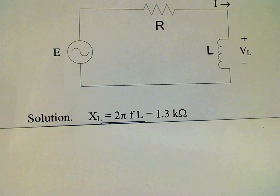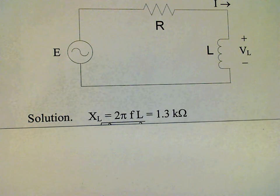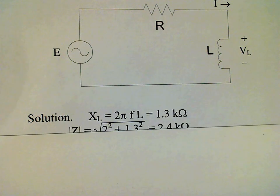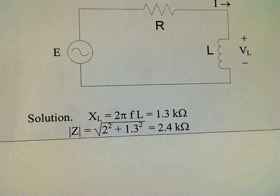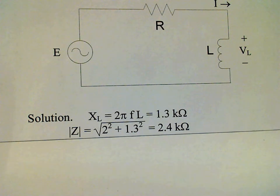We have 1.3 kΩ for the reactance and 2 kΩ for the resistance. So we can compute the impedance using the square root of the sum of the squares and get 2.4 kΩ.